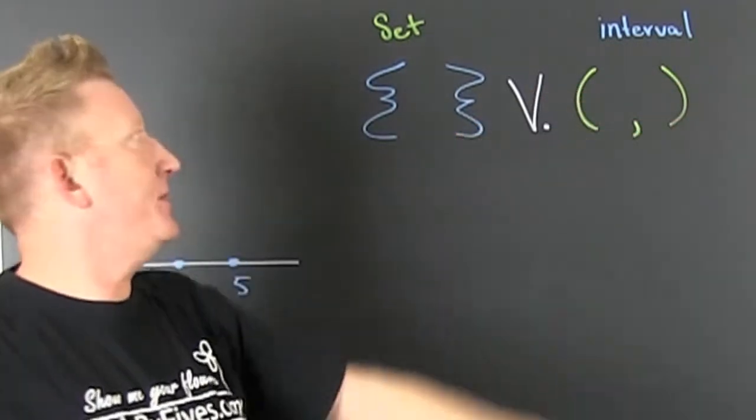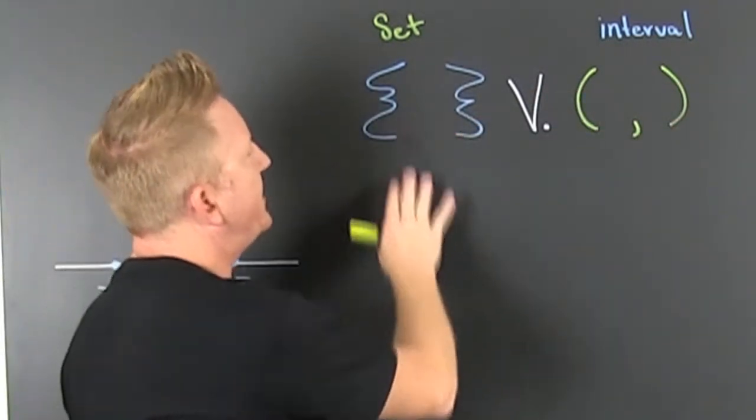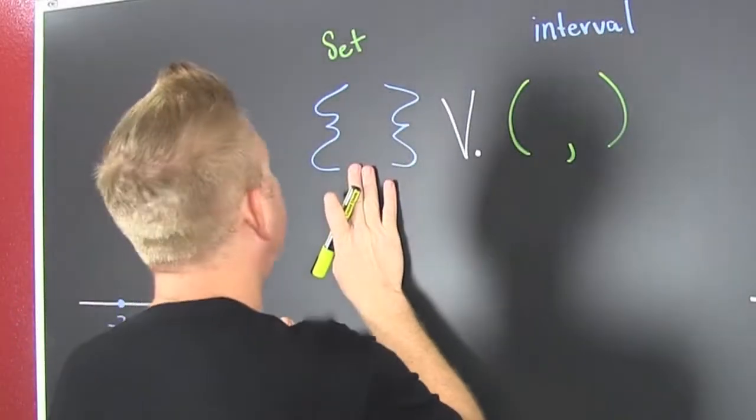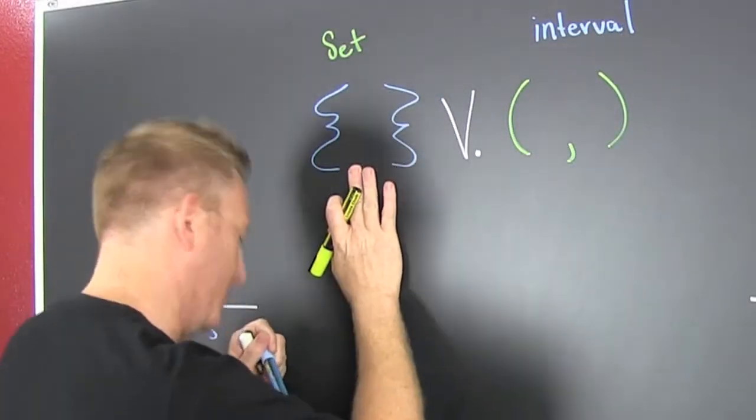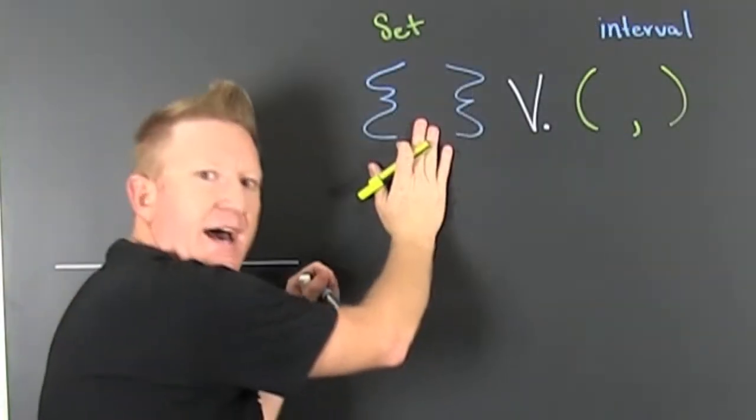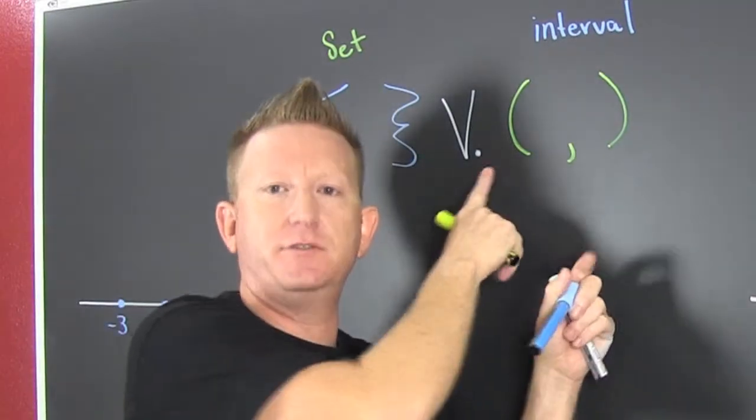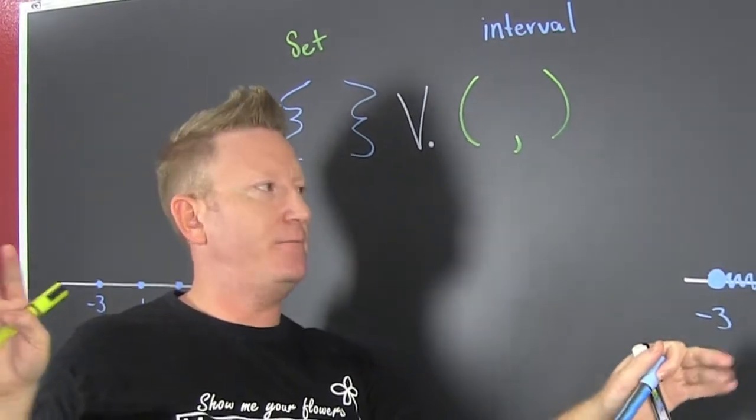The curlies is set notation. These are individual values. The roundies or the squareies, those are intervals. That's a whole range of numbers.